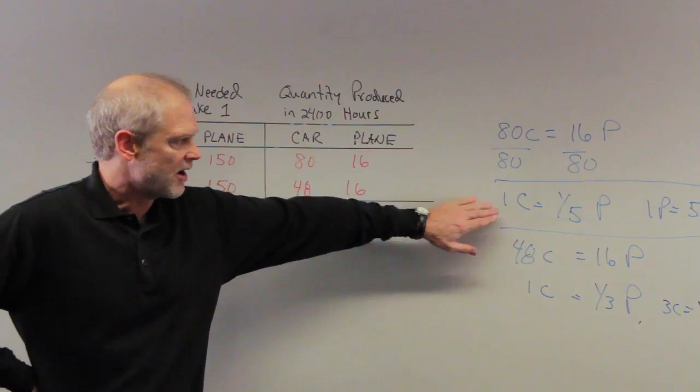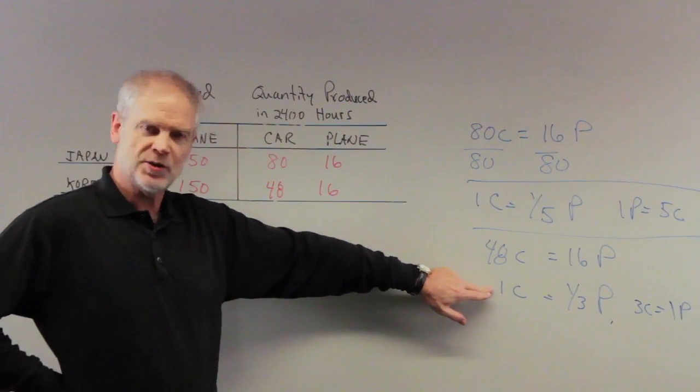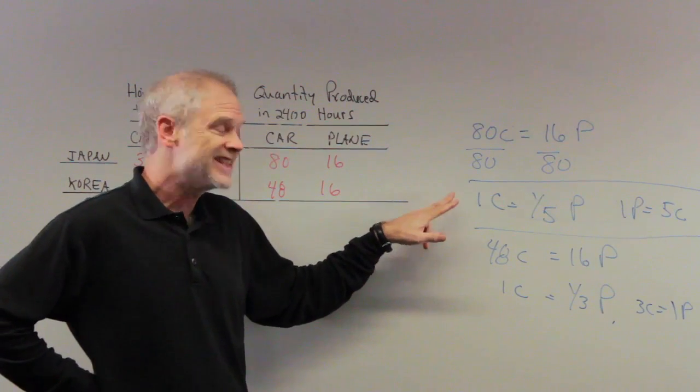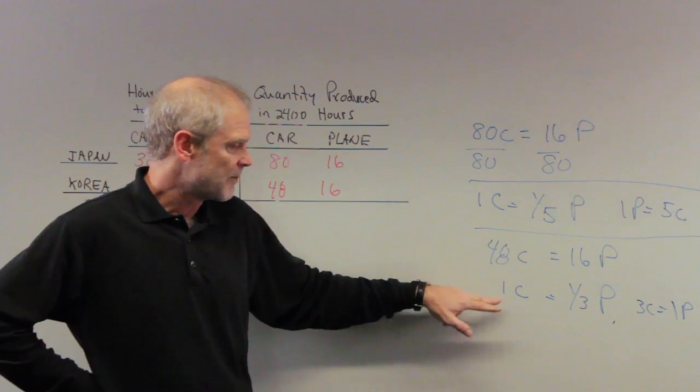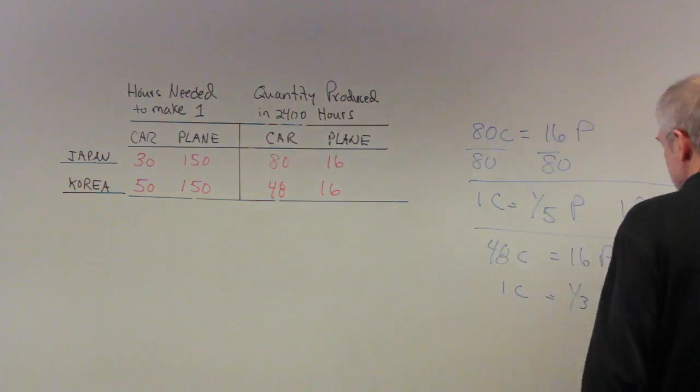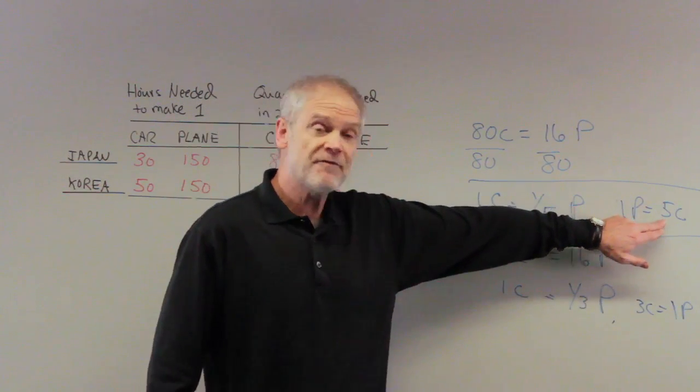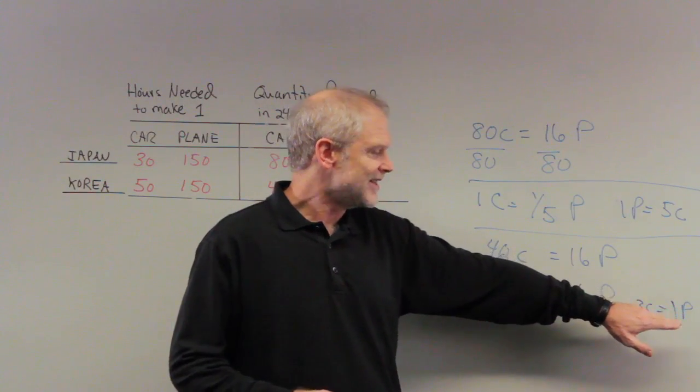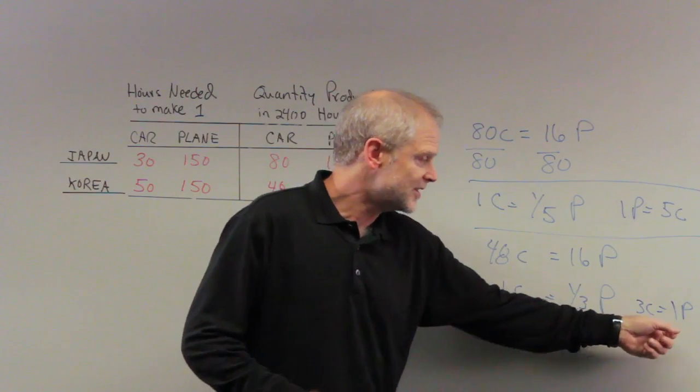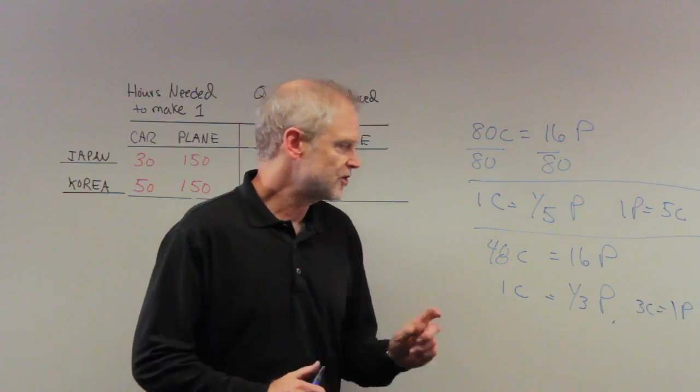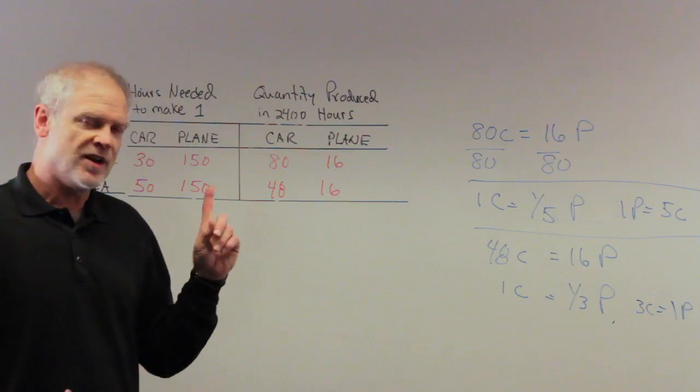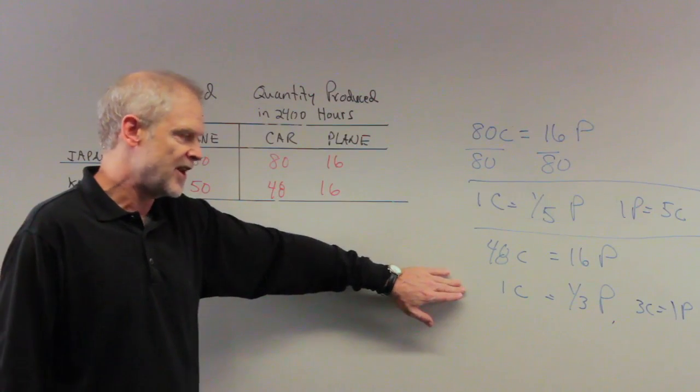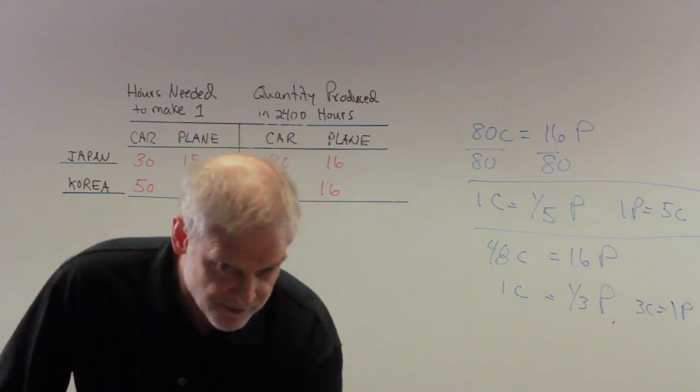Let's go the other way. Every time Japan produces a plane, they give up five cars. Every time Korea produces a plane, they give up three cars. So planes are relatively expensive in Japan because it costs them five cars. And they're relatively cheap in Korea because it only cost them three cars. So have we reached it? Yes. Each country is going to specialize in the good for which they have a comparative advantage. In this case, Japan has a comparative advantage in the production of cars. Korea has a comparative advantage in the production of planes. Long way to get to this problem. But it's a very useful way to kind of air this stuff out.